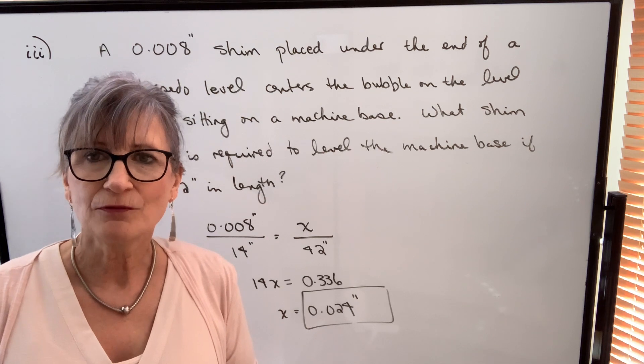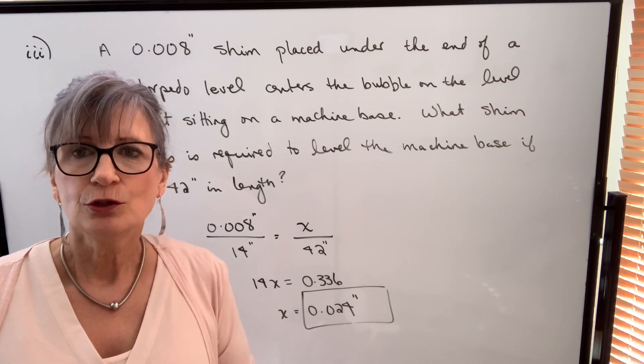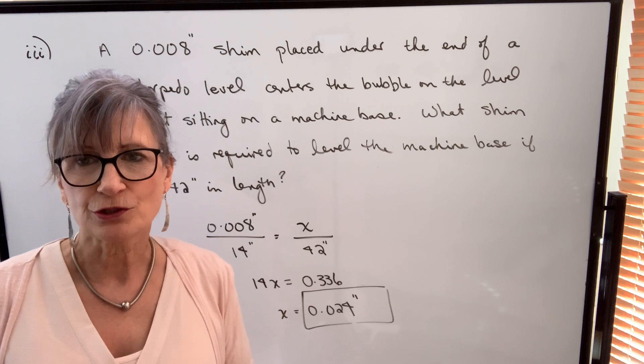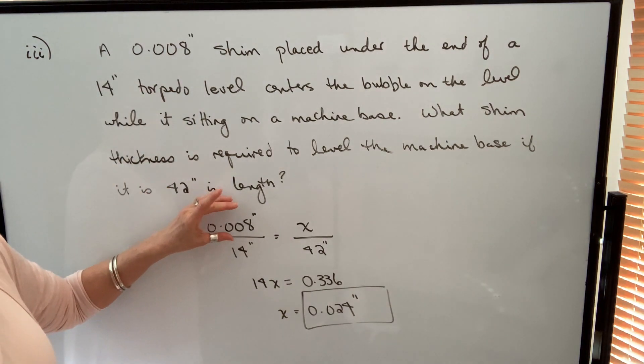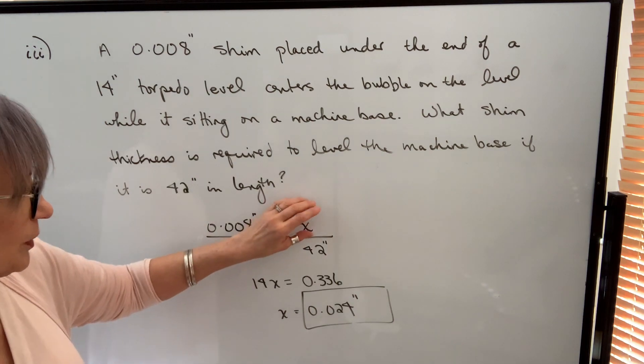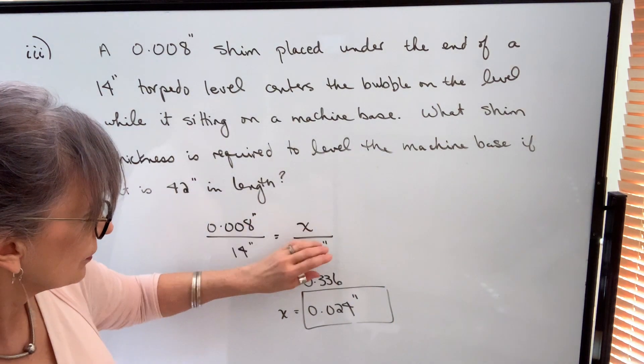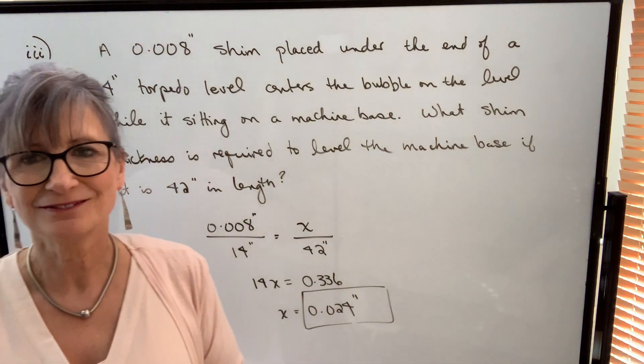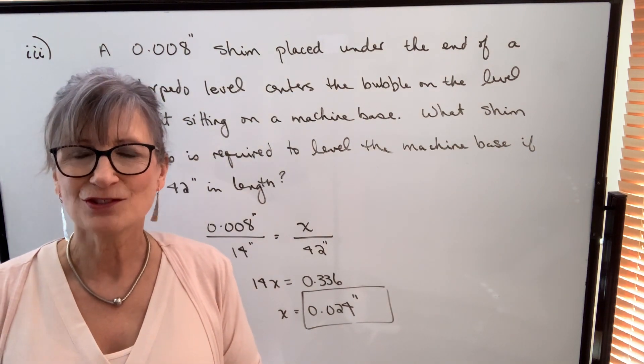Regardless of the type of level you are going to be using, you will set up your solution by setting up a direct proportion. You'll need to know some amount it's out over some length, and then you're going to be required to find the amount it's out over the length of the machine base. Cross multiply and solve.